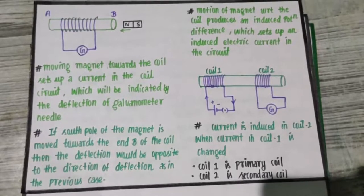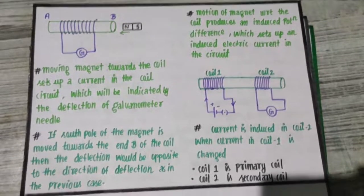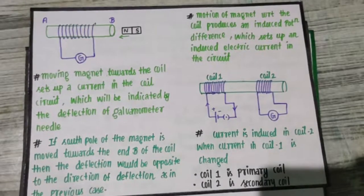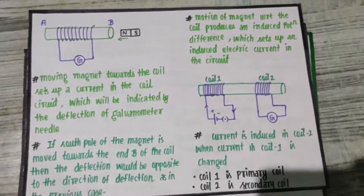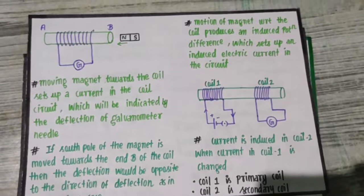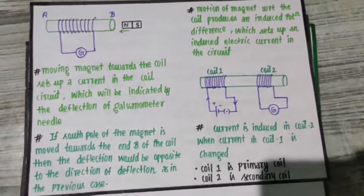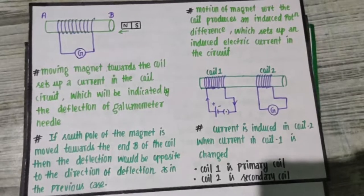If the potential difference is set up, electrons flow, then the current will be generated. Because of the change in magnetic field, the time varying magnetic field, what happens? There will be induced potential difference. Induced potential difference, the current on the path will be generated.